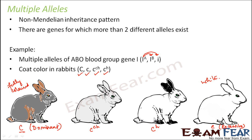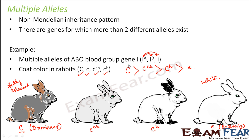Looking at the order of dominance: capital C is the most dominant, dominating all other alleles. After that comes C^CH (the chinchilla), followed by C^H, and finally the recessive small c. For example, if the genotype is C^H / C^CH, the phenotype will be chinchilla because C^CH is more dominant than C^H.